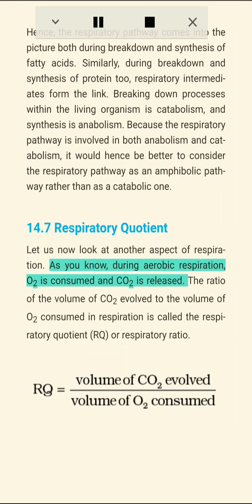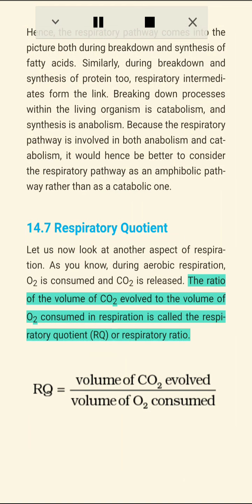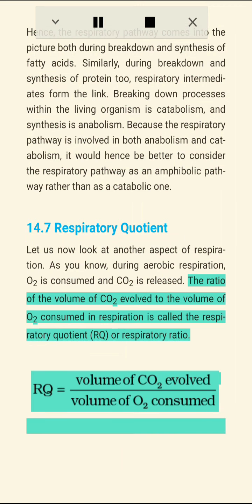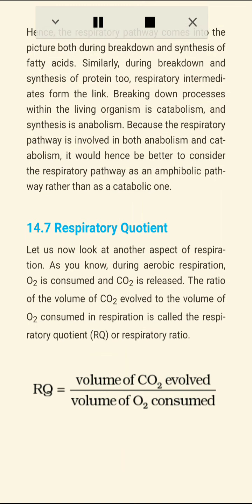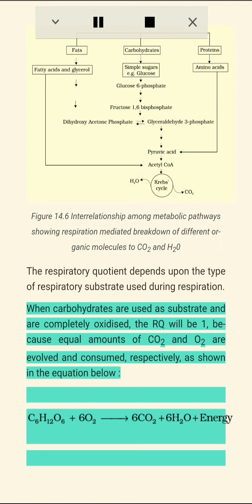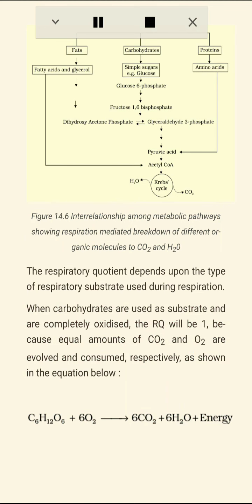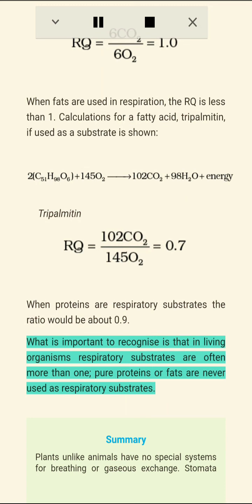14.7 Respiratory Quotient. Let us now look at another aspect of respiration. As you know, during aerobic respiration O2 is consumed and CO2 is released. The ratio of the volume of CO2 evolved to the volume of O2 consumed in respiration is called the respiratory quotient (RQ) or respiratory ratio. The respiratory quotient depends upon the type of respiratory substrate used during respiration. When carbohydrates are used as substrate and are completely oxidized, the RQ will be 1 because equal amounts of CO2 and O2 are evolved and consumed respectively. When fats are used in respiration the RQ is less than 1. For example, for the fatty acid tripalmitin used as a substrate, the RQ value can be calculated. When proteins are respiratory substrates the ratio would be about 0.9.